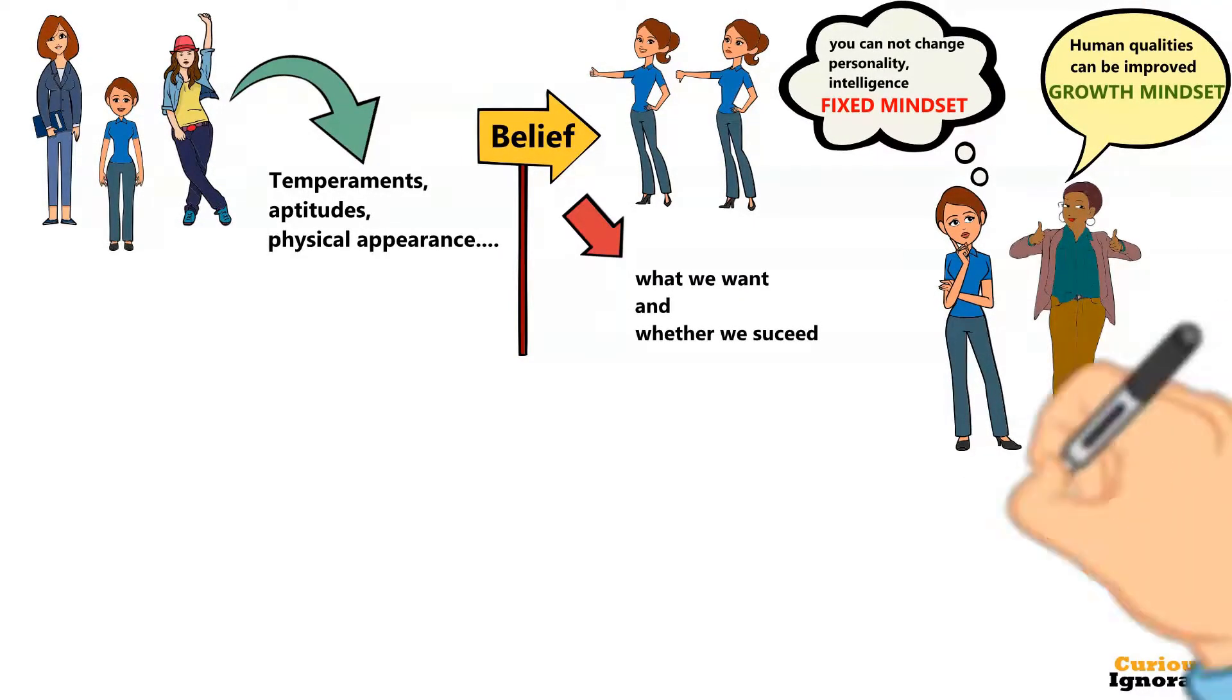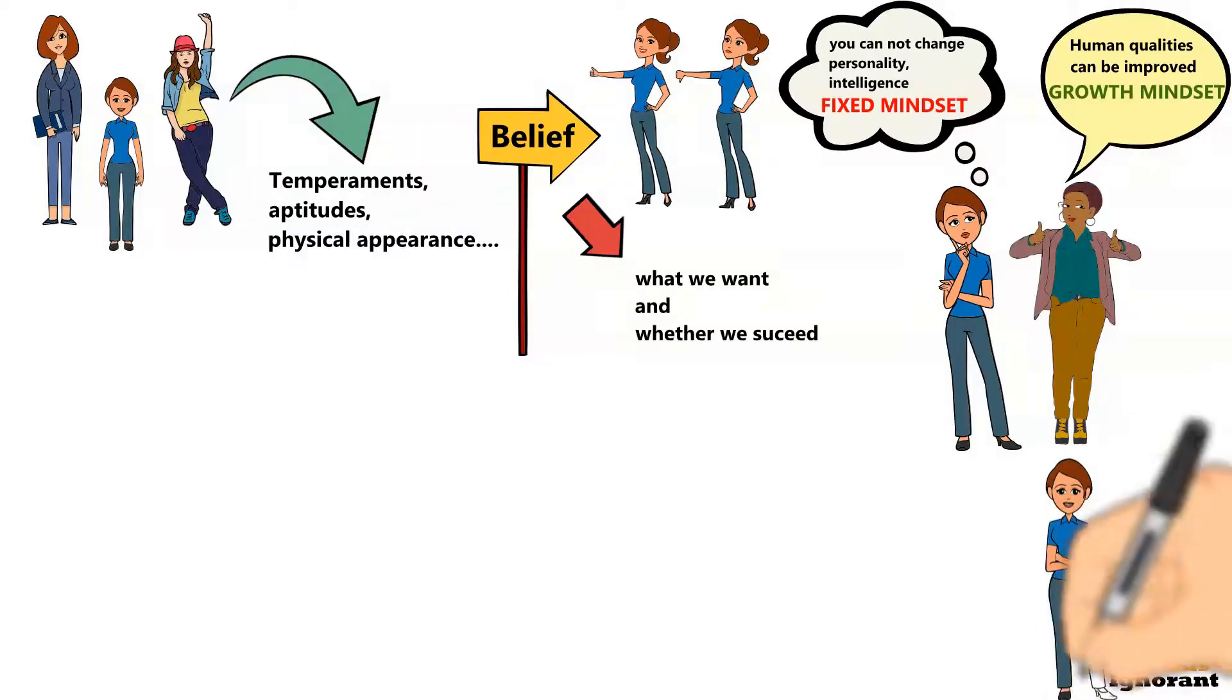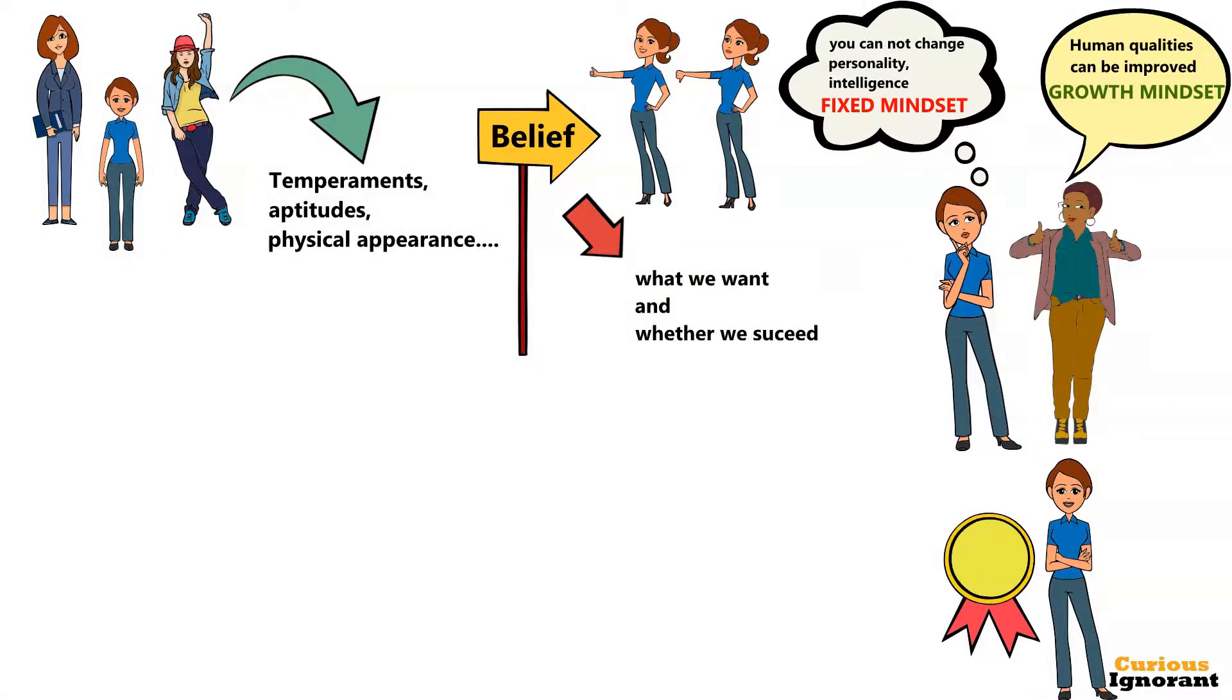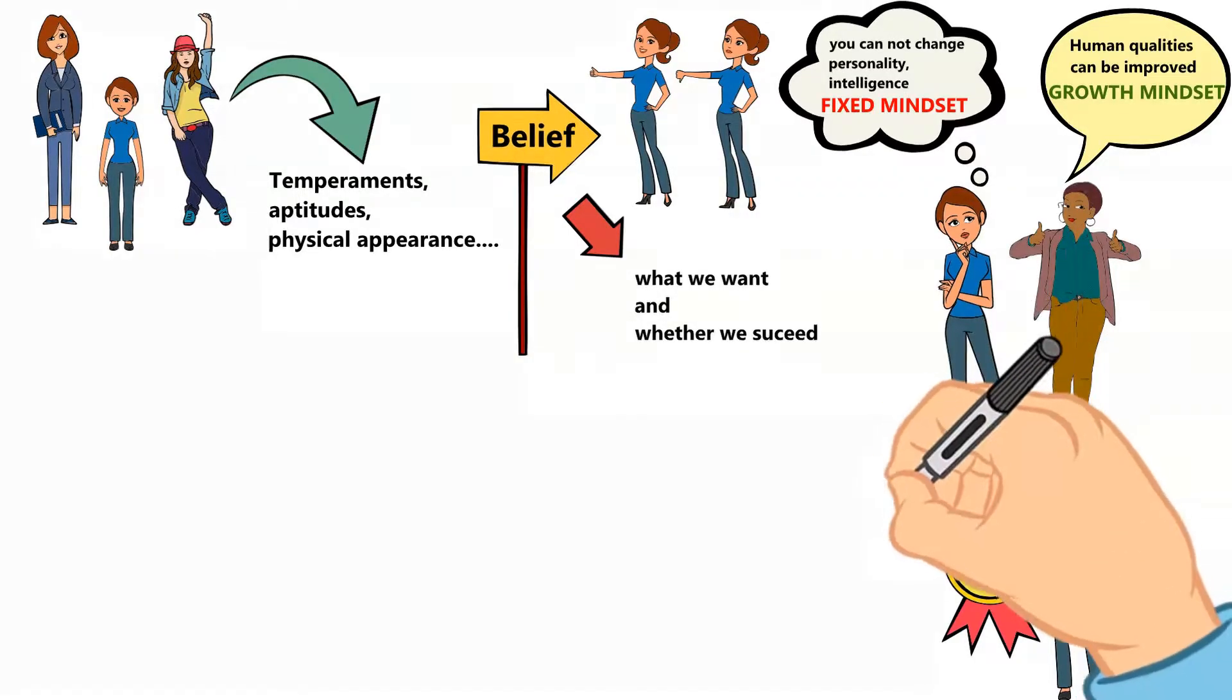When you think your qualities are fixed, you are continuously trying to prove yourself as smart and talented at every step. You look smart, don't look dumb. This attitude is valid in every sphere of your life, in the classroom, in careers, in relationships.